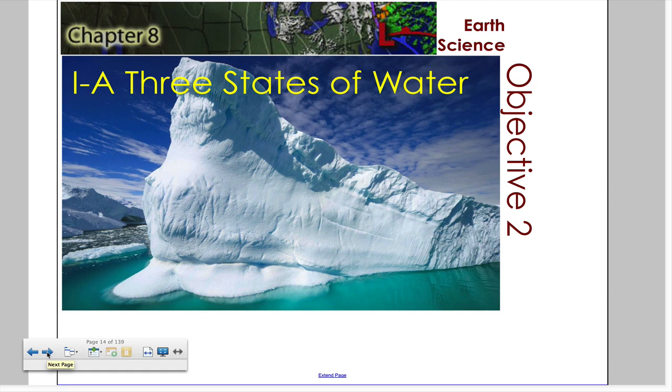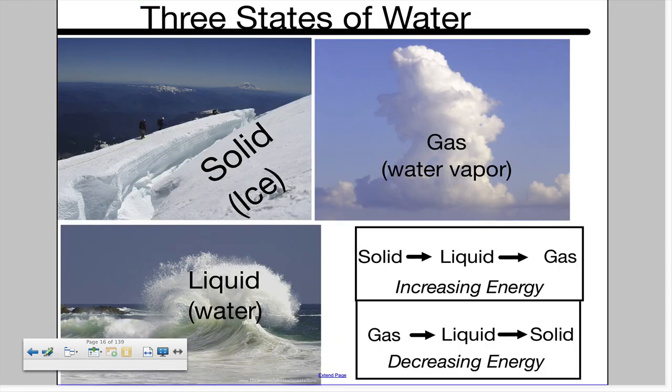This video will review Chapter 8, Section 1A: Three States of Water. Water exists in three states on Earth. We have a solid, which is found as ice, and there's the liquid state, which is liquid water.